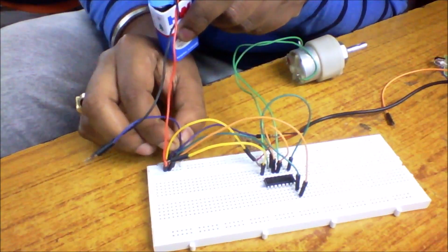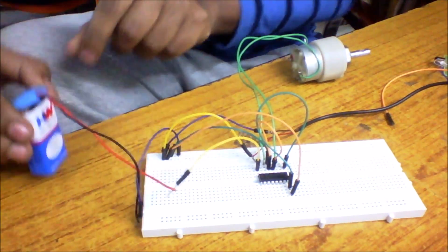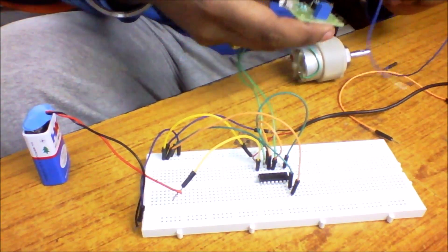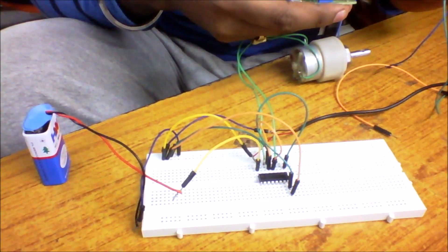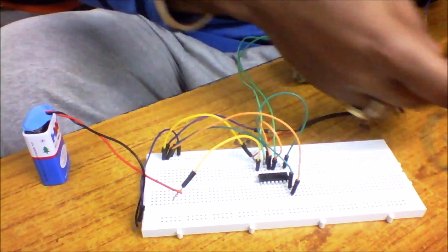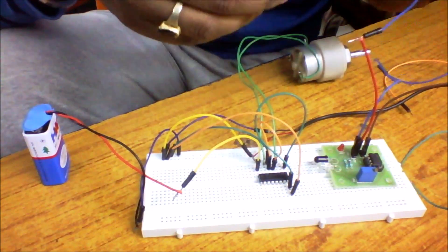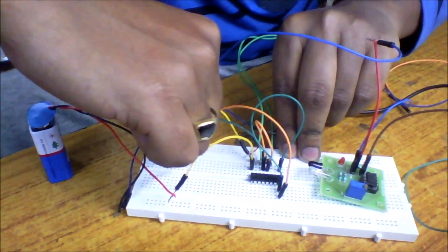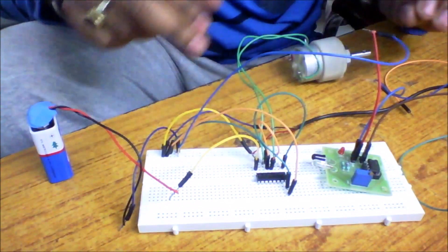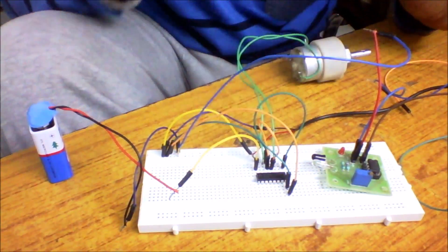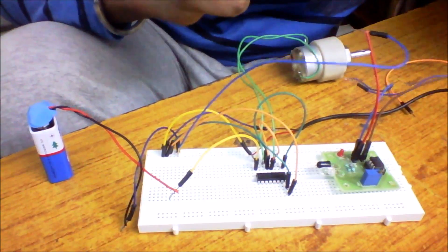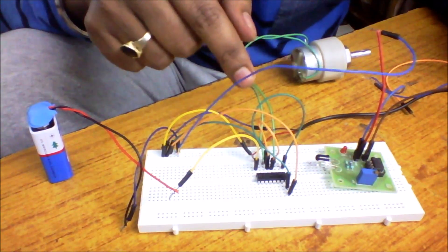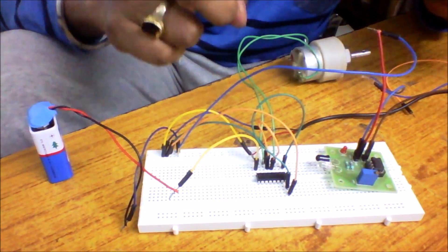Now the main part - the IR sensor module. There are three terminals: positive, negative, and output. I'll connect the positive terminal to the 5 volt supply. Be cautious that we don't give more than 5 volt to this module. Now let's connect the output. We can give the output signal to pin number 2 or pin number 7 - it's optional. If we give the signal to pin number 2, the motor will rotate clockwise.